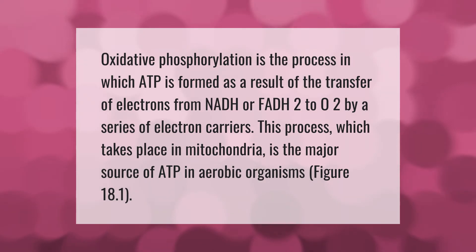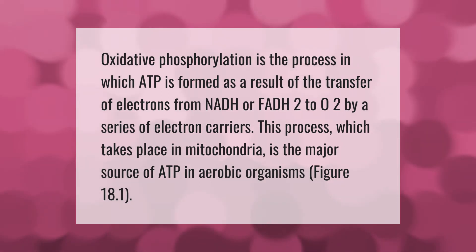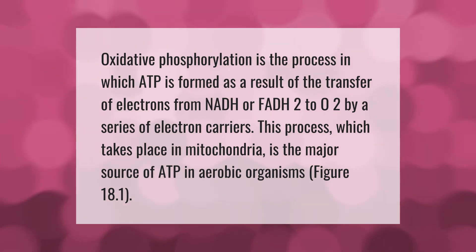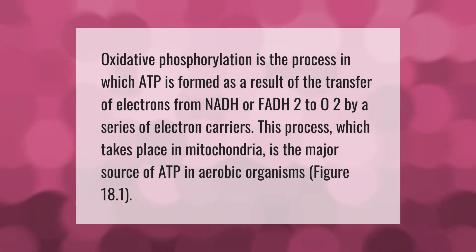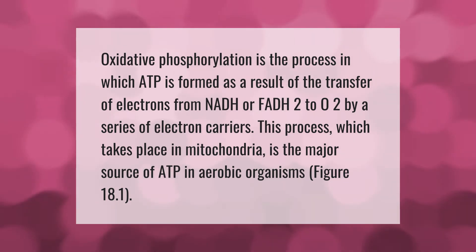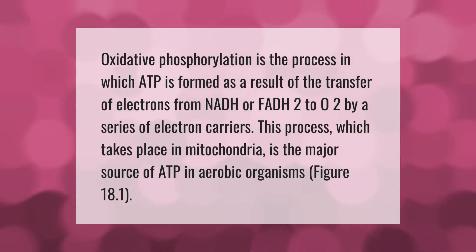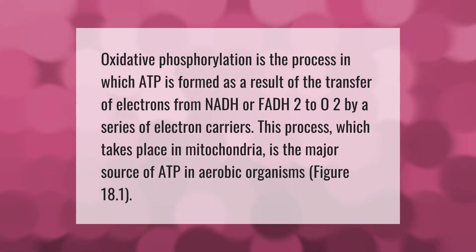Oxidative phosphorylation is the process in which ATP is formed as a result of the transfer of electrons from NADH or FADH2 to O2 by a series of electron carriers. This process, which takes place in mitochondria, is the major source of ATP in aerobic organisms.